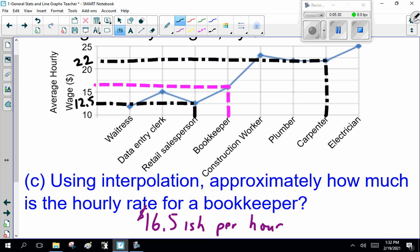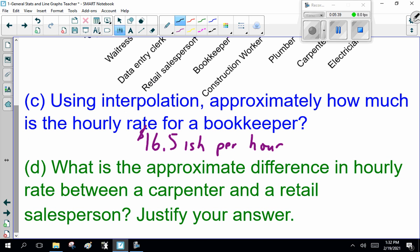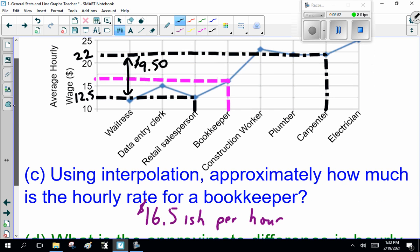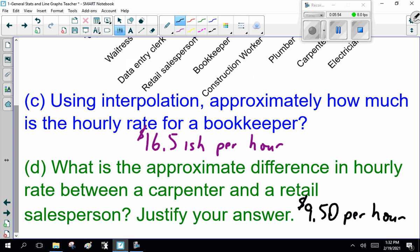So what's the difference? Grab your calculator. 22 minus 12.50. That's about 9.50 an hour. I said it came from here. 22 minus 12.50. I'm hoping it's 9.50.